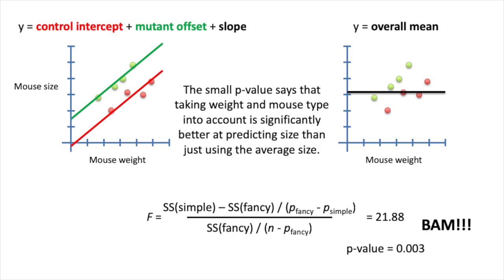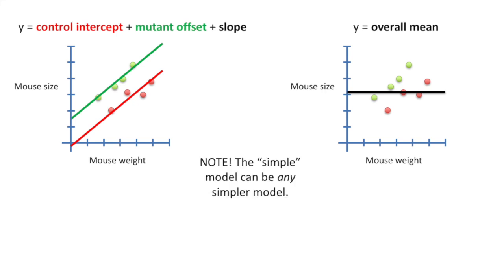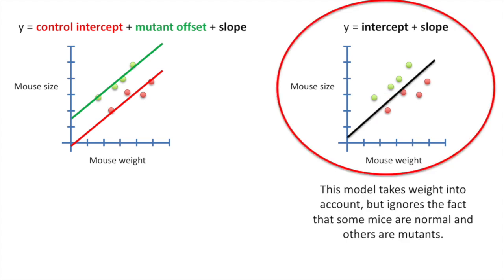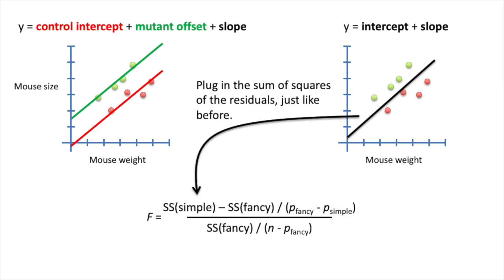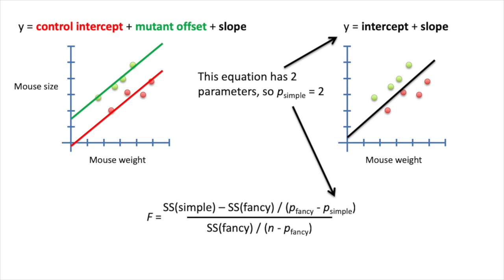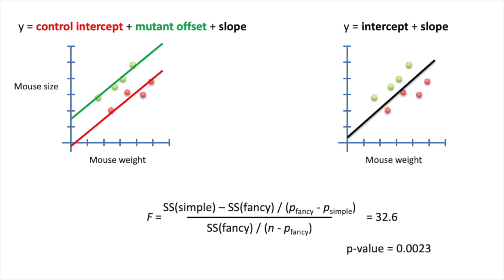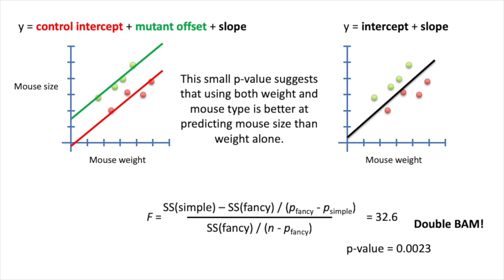BAM! That small p-value says that taking weight and mouse type into account is significantly better at predicting size than just using the average. Note that the simple model can be any simpler model. If we did a super simple linear regression — a model that takes weight into account but ignores mouse type — we plug in the sum of squares of residuals and p-simple equals 2, giving us a p-value of 0.0023. Double BAM! This small p-value suggests that using both weight and mouse type is better at predicting mouse size than weight alone.